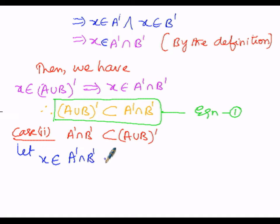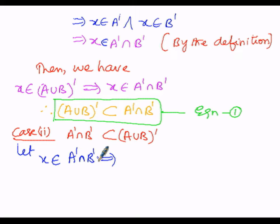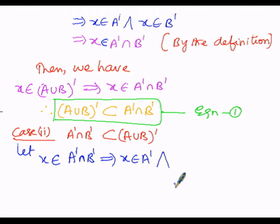Since x belongs to A' ∩ B', this implies x belongs to A' and x also belongs to B'. The intersection symbol indicates 'and' (symbolic notation: inverted V), so x belongs to A' and x belongs to B'.